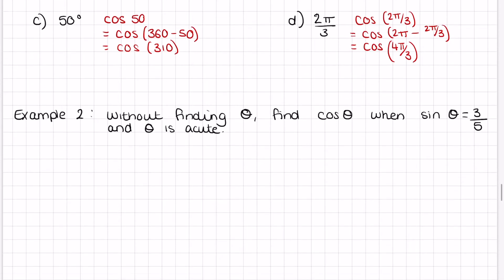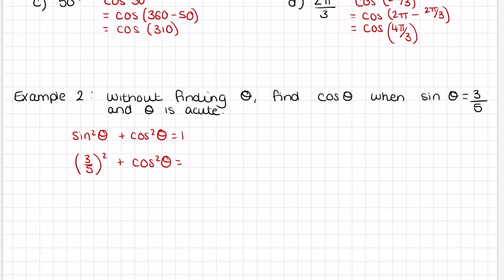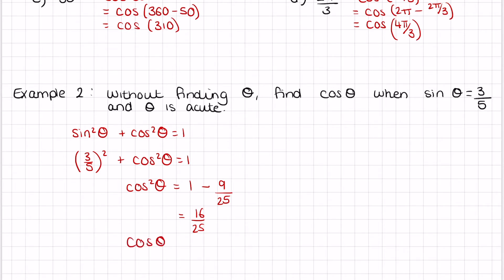Example 2: without finding θ, find cos θ when sin θ = 3/5 and θ is acute (between 0 and 90 degrees). Using the formula sin²θ + cos²θ = 1: if sin θ = 3/5, then (3/5)² + cos²θ = 1, so cos²θ = 1 − 9/25 = 16/25, which means cos θ = 4/5.